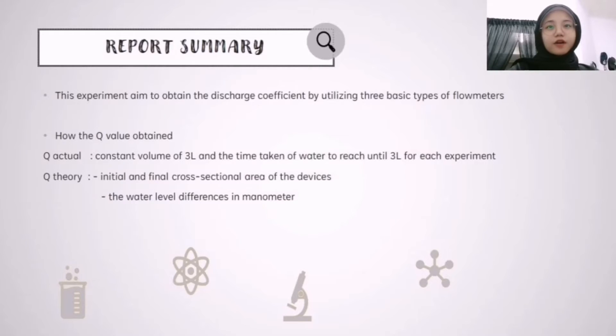First of all, in this experiment, we could obtain the flow rate measurement with comparison of the discharge coefficient by utilizing three basic types of flow meters which are orifice plate, nozzle and venturi meter.